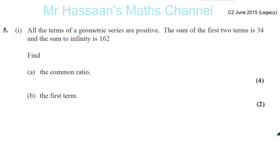It says all the terms of a geometric series are positive. The sum of the first two terms is 34, and the sum to infinity is 162. So we've got to find the common ratio and the first term. I guess that can be done in one kind of step together.